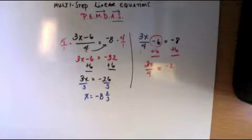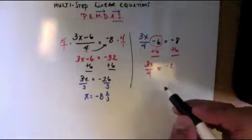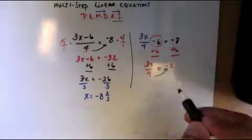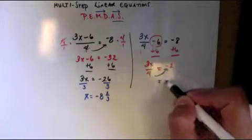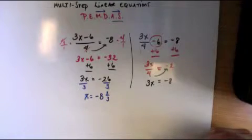Now remember, use your shortcut. Now this is division, or a fraction if you want to call it that. To get rid of a fraction, let's cross multiply. 4 times negative 2 is negative 8, and we're left with 3x.